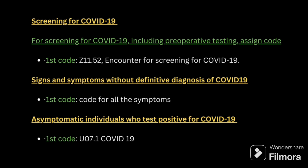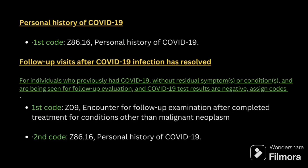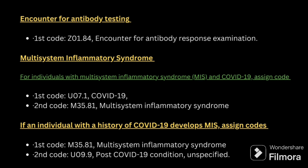For COVID-19 screening — that is, testing to determine whether the patient has COVID — code Z11.52. For signs and symptoms without a definitive diagnosis of COVID where testing shows a negative result, code all the individual symptoms. For an asymptomatic patient who tested positive for COVID, code only for COVID. For personal history of COVID, assign the personal history code. For a follow-up visit after COVID-19, first code Z09 and second code personal history of COVID. For encounter for antibody testing, code Z01.84.